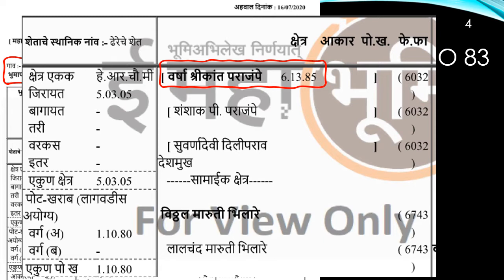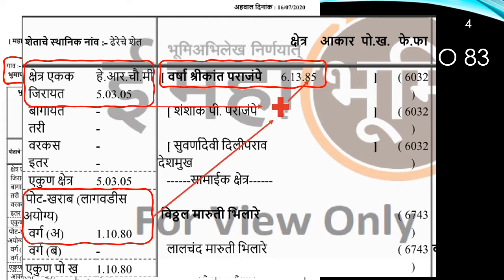The area of the plot is 6 hectares, 13 airs, and 850 square meters, of which 5.0305 hectares is cultivable. It is agricultural land which gives an annual local produce. The remaining 1.1080 hectares is uncultivable, or what they call 'port harab', meaning it is not fit for cultivation.